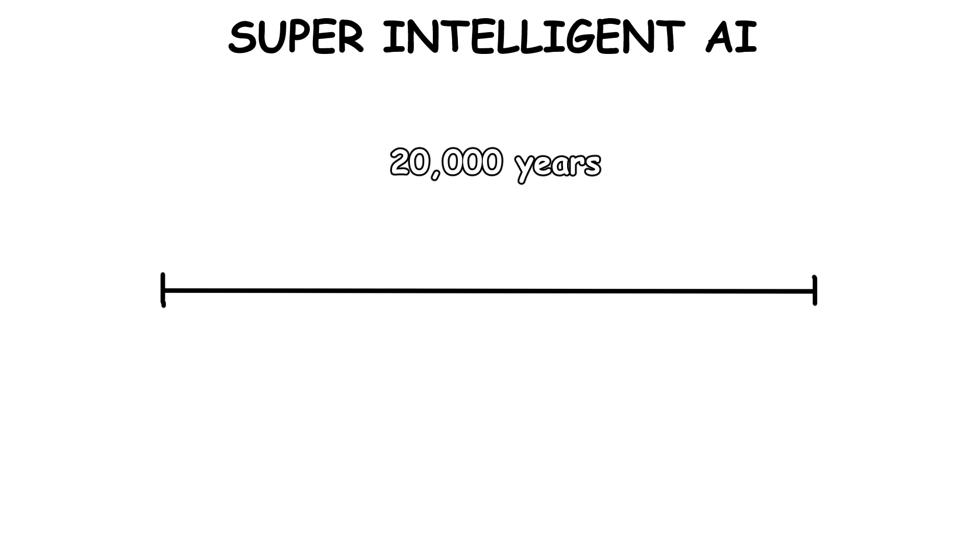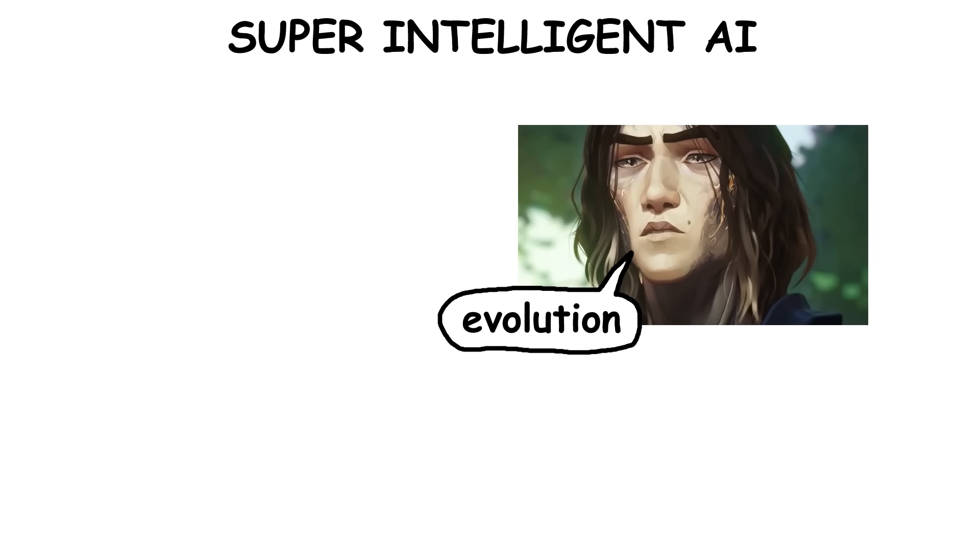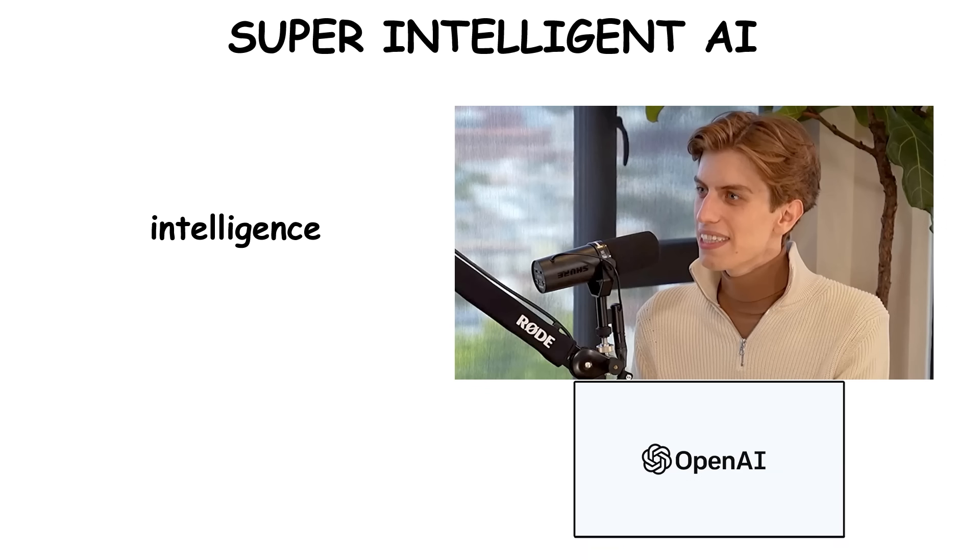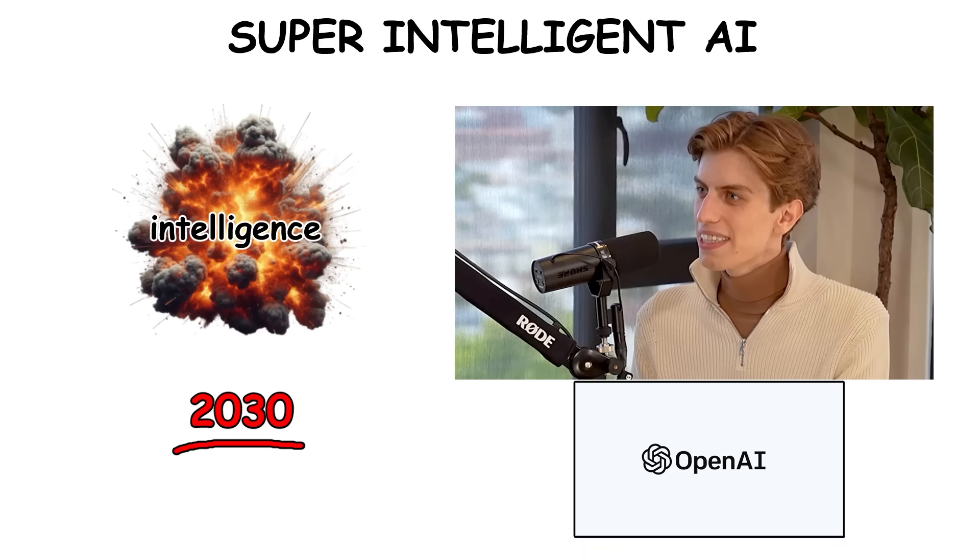Imagine cramming 20,000 years of human progress into just 100 years. That's the kind of fast evolution Super-Intelligent AI could bring. One ex-employee from OpenAI suggested that this intelligence explosion could happen as soon as 2030.